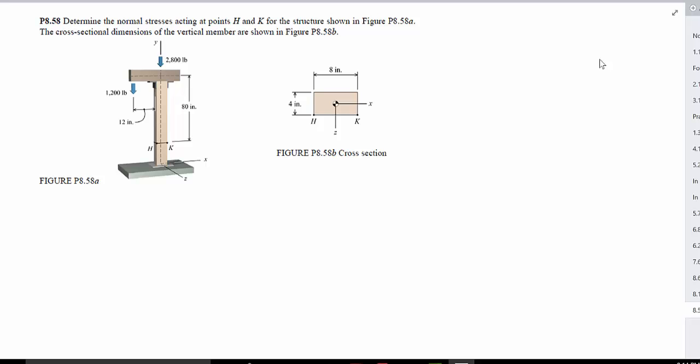So if we look at this cross-sectional member, the first thing that we can determine are the sectional properties. So we can say that the area of this member is going to be 4 times 8, so that's 32 inches squared.